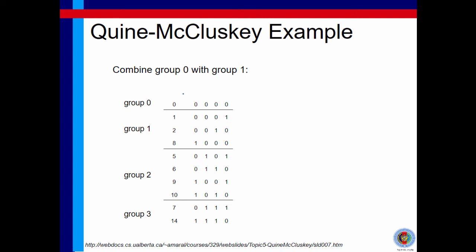Now that we have grouped the minterms into the proper groups, next we want to combine these minterms to become implicants of two minterms. How? We are going to combine them from the neighboring groups, for example, group 0 with group 1.